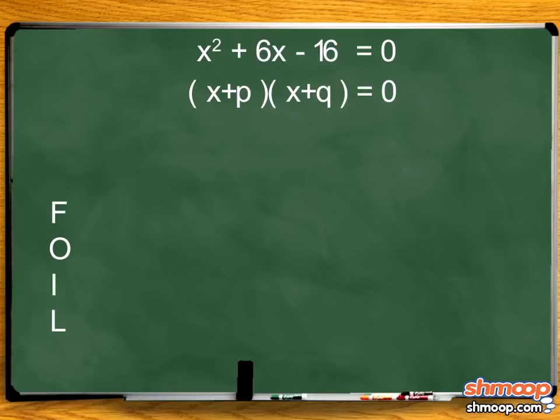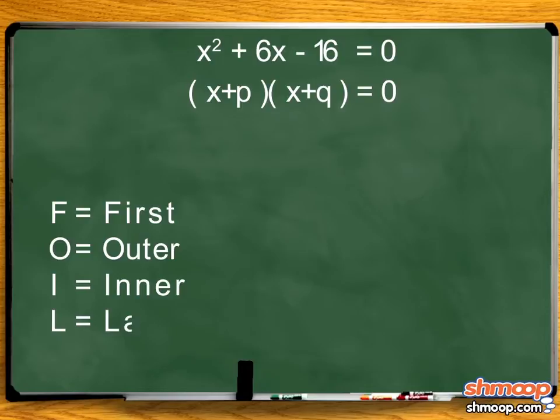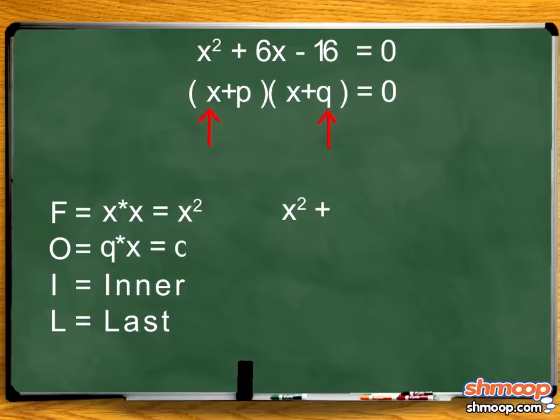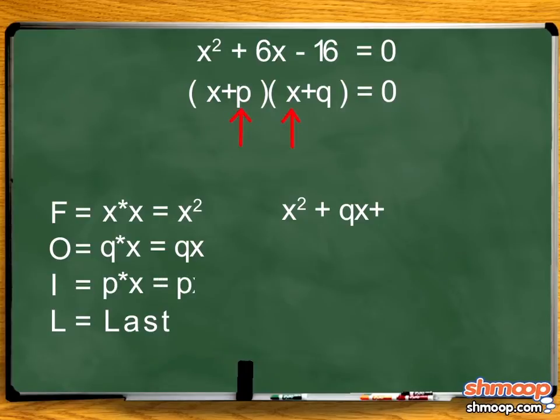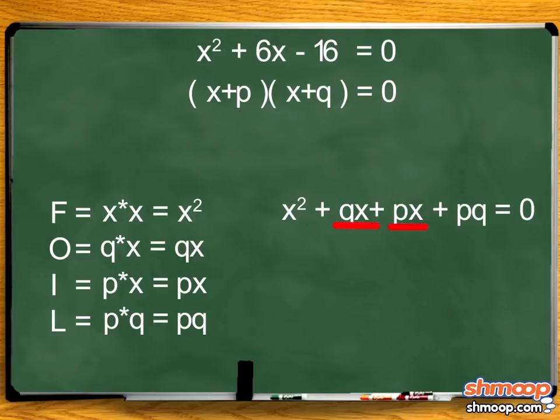We can use FOIL to multiply this out. FOIL stands for First, Outer, Inner, then Last. Since p and q are just constants, p·x and q·x are like terms because they both contain x. We can combine them to make (p + q)x.